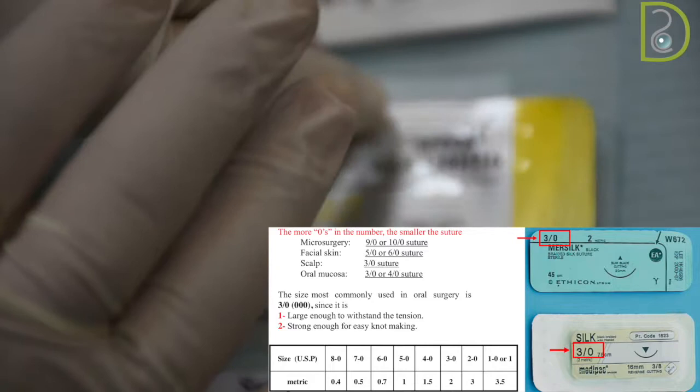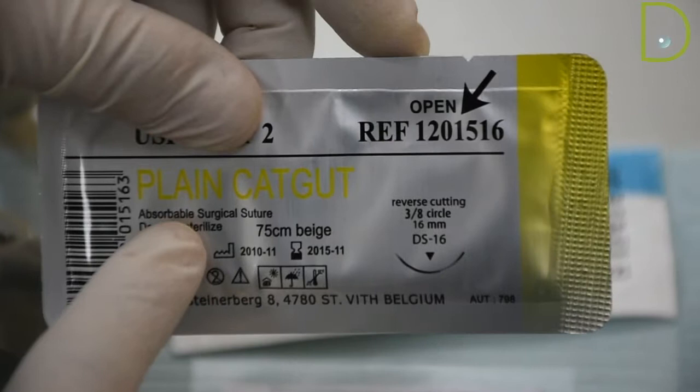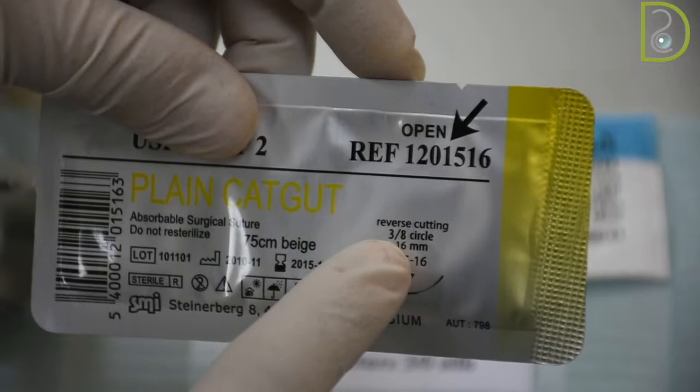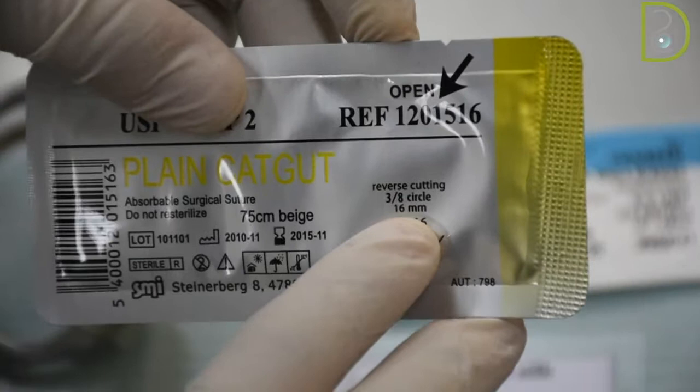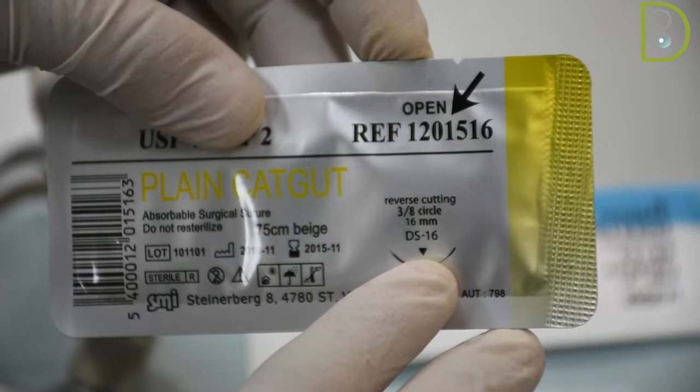Over here, this one is the plain cat gut, which is a natural resorbable. Again, when we want to read, it is absorbable surgical suture. This is a reverse cutting. Again, it's a 3/8 of a circle. This needle is 16 mm in length, 16 millimeters. And also it's a reverse cutting since you can see the symbol of an upside down triangle.